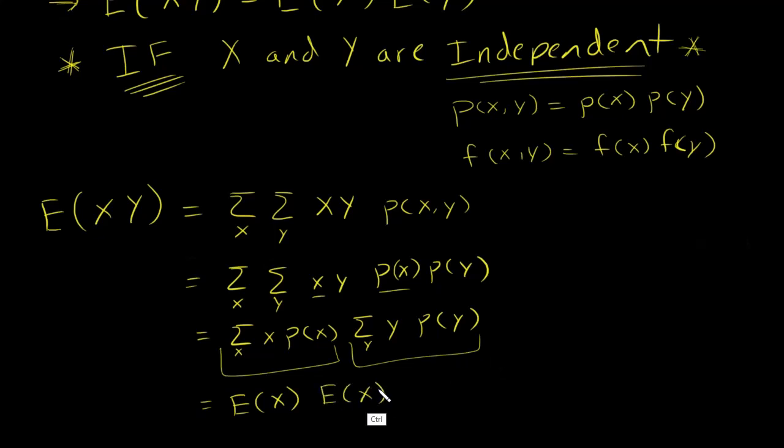Let me write Y there. Same thing is true when you have continuous random variables. Instead of sums, you have integrals, but same idea. So we integrate over X, we integrate over Y, we have X times Y, and then we have our joint distribution function, dy dx.